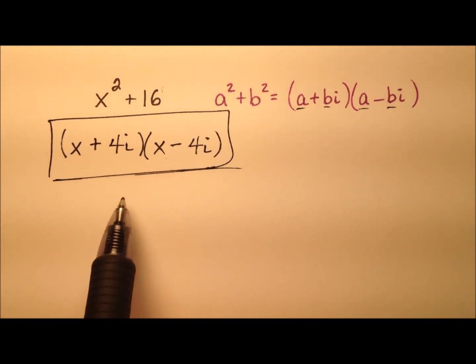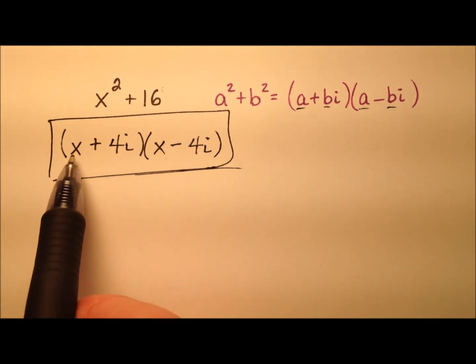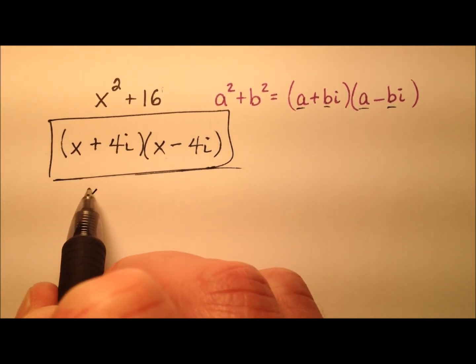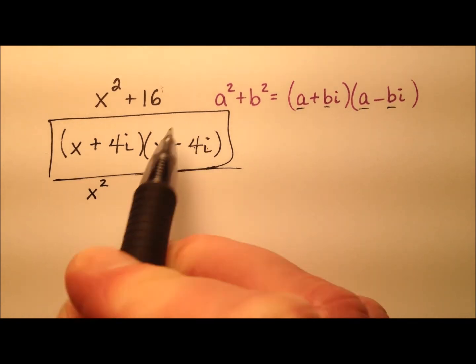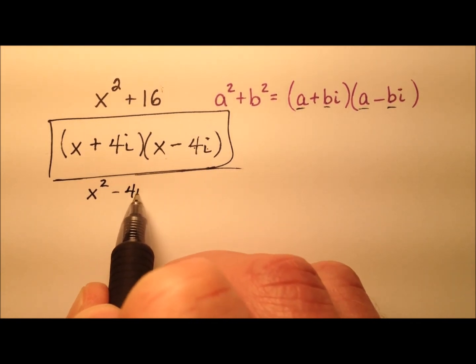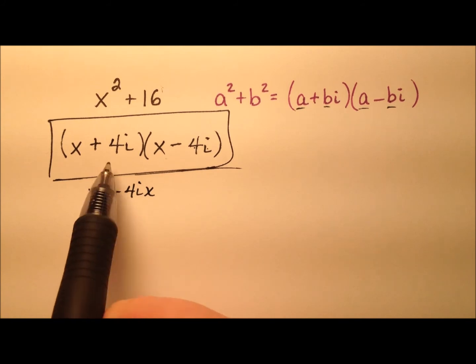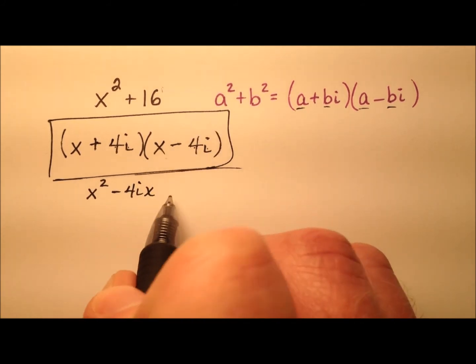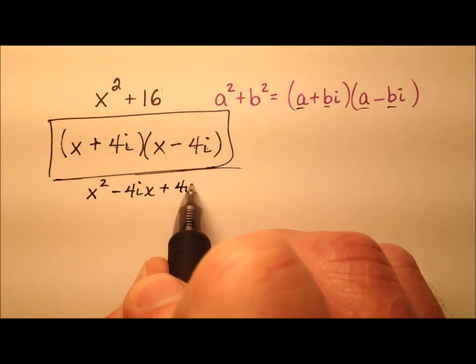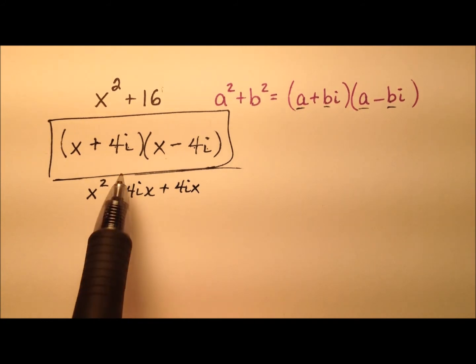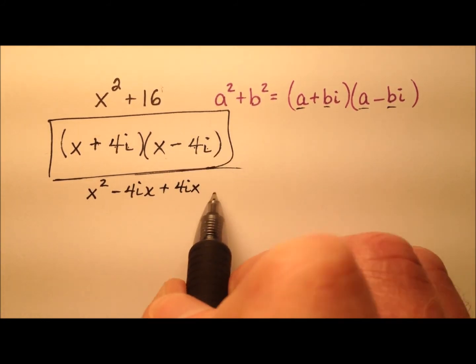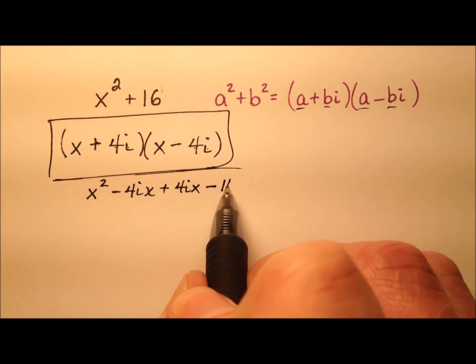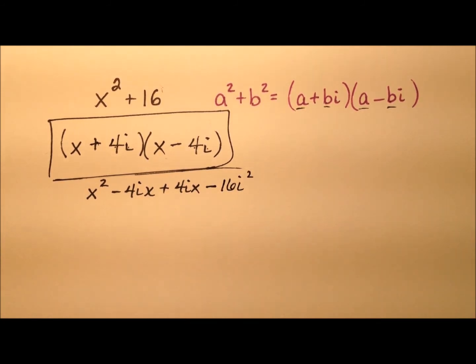Let's go ahead and multiply that back out and see how this works. So x times x is x squared, and then x times negative 4i will be minus 4ix, and then a positive 4i times x will be a plus 4ix.